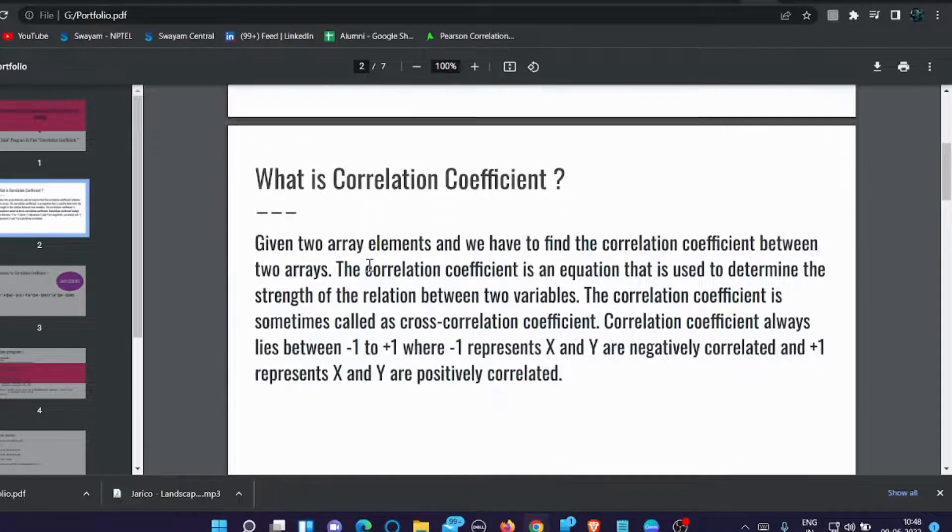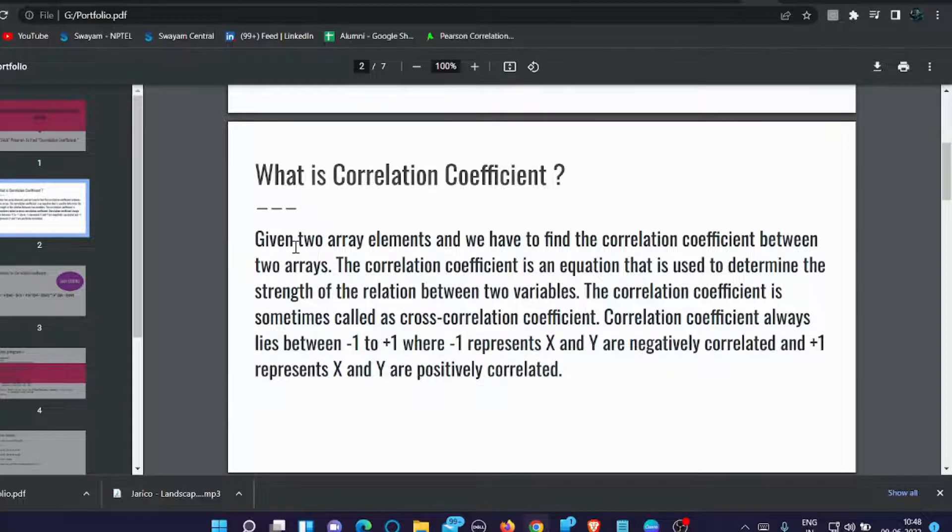What is correlation coefficient? Given two array elements, we have to find the correlation coefficient between two arrays. The correlation coefficient is an equation that is used to determine the strength of the relation between two variables.